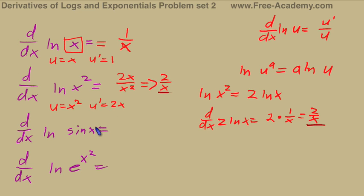To lighten things up a little bit, let's take the derivative of the sine of x. So, our derivative equals cosine of x over sine of x, which is cotangent of x in simplified form.